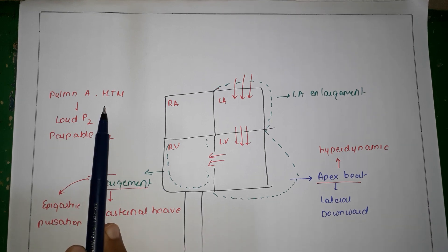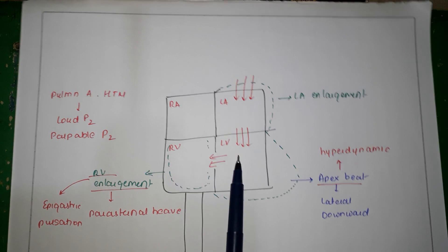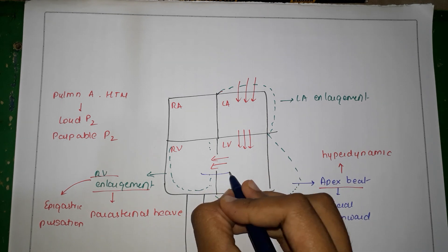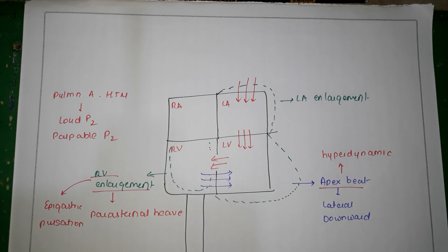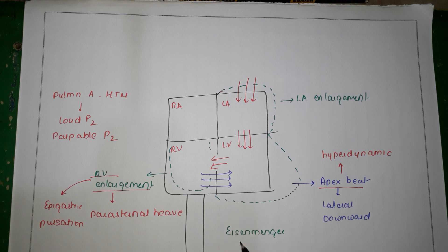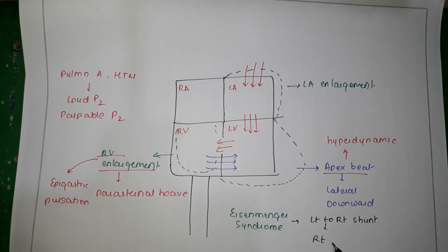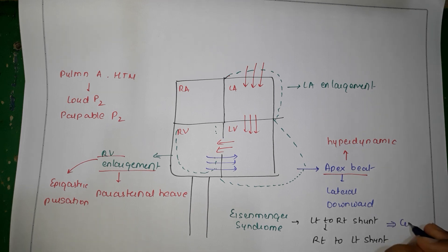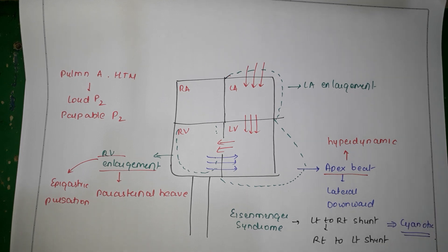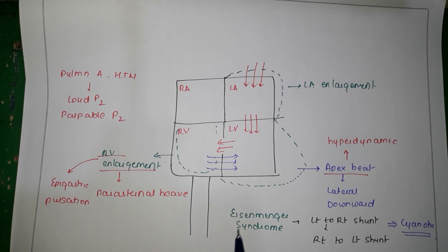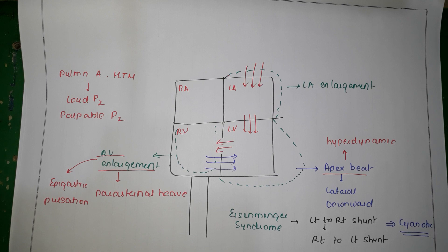Once pulmonary artery hypertension sets in, RV pressures will exceed LV pressures, leading to what is called a right-to-left shunt. When this right-to-left shunt occurs after development of pulmonary artery hypertension, it is called Eisenmenger syndrome. Eisenmenger syndrome converts a left-to-right shunt into a right-to-left shunt, and the baby who was acyanotic before will finally become cyanotic. Once this happens it's very difficult to reverse the hemodynamic changes, so surgical repair of VSD is important to prevent Eisenmenger syndrome.